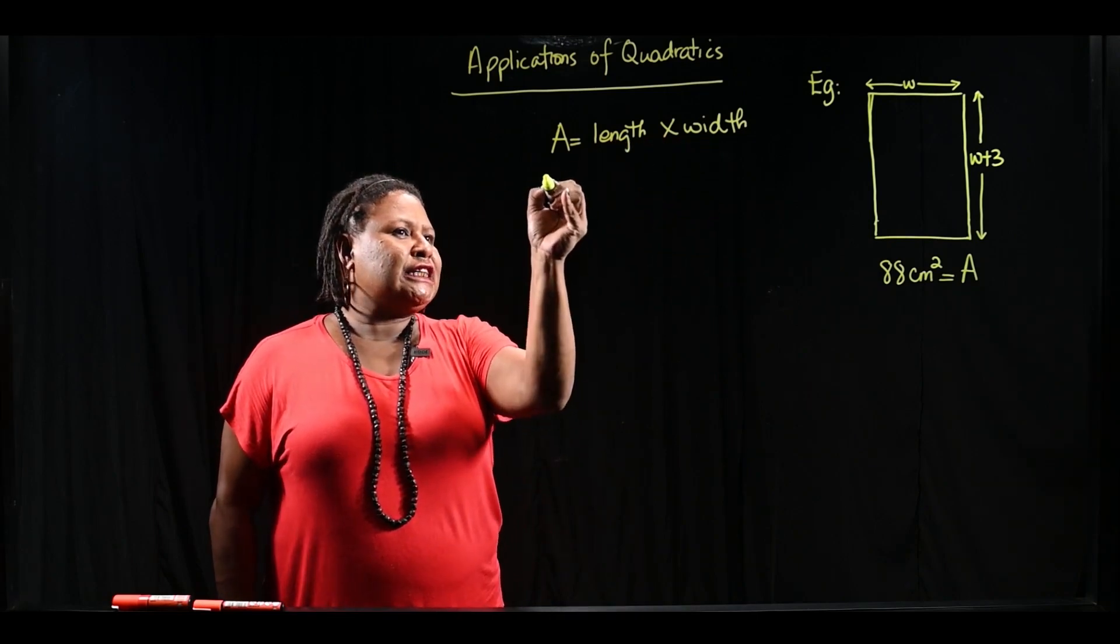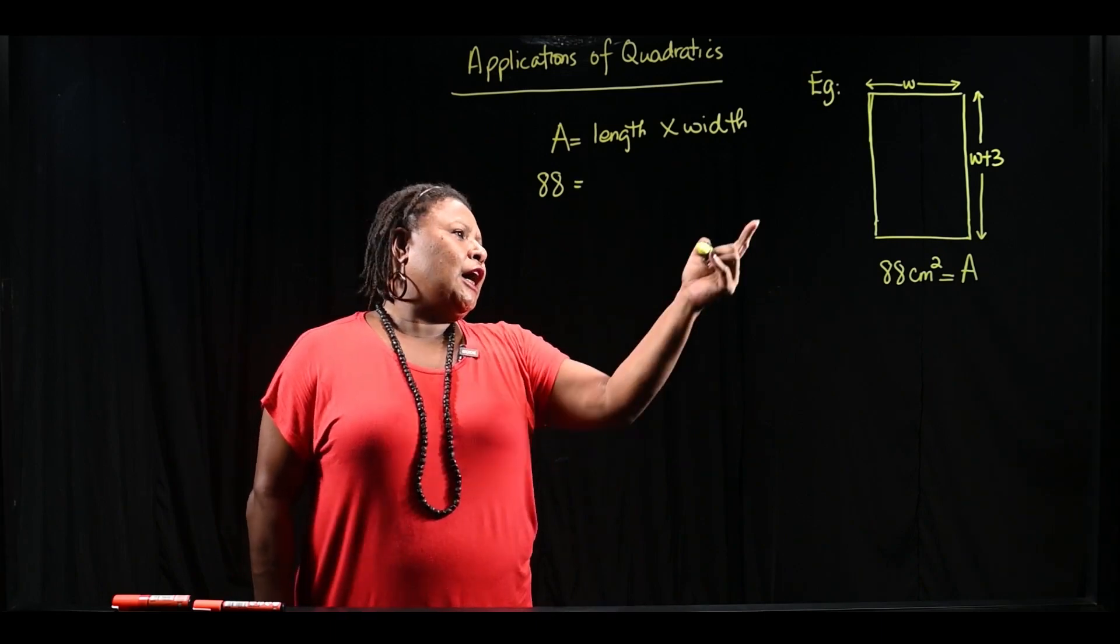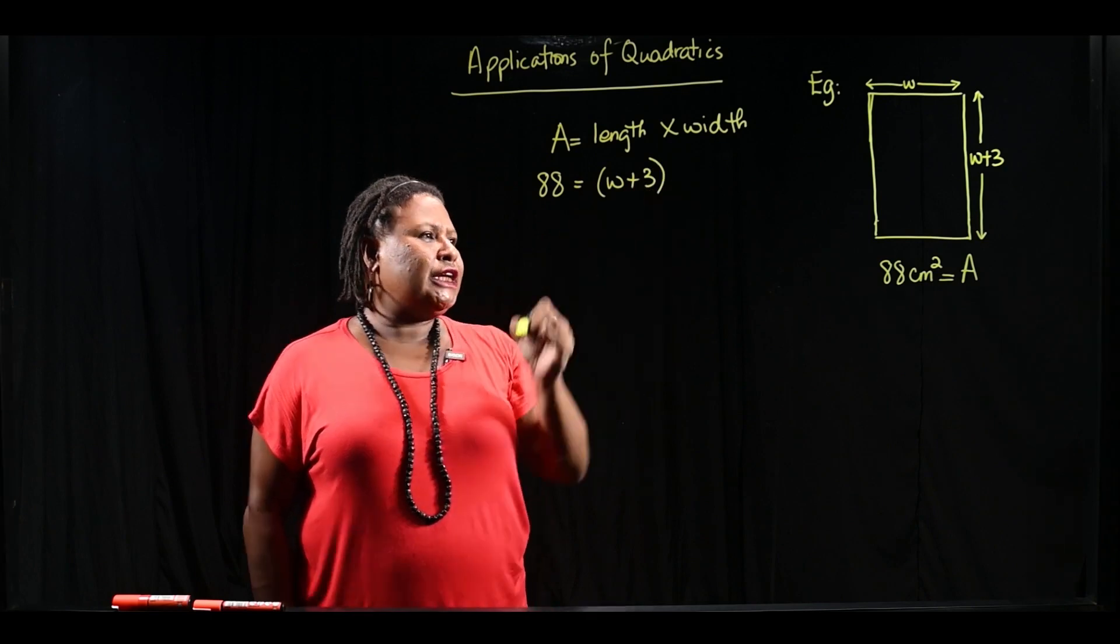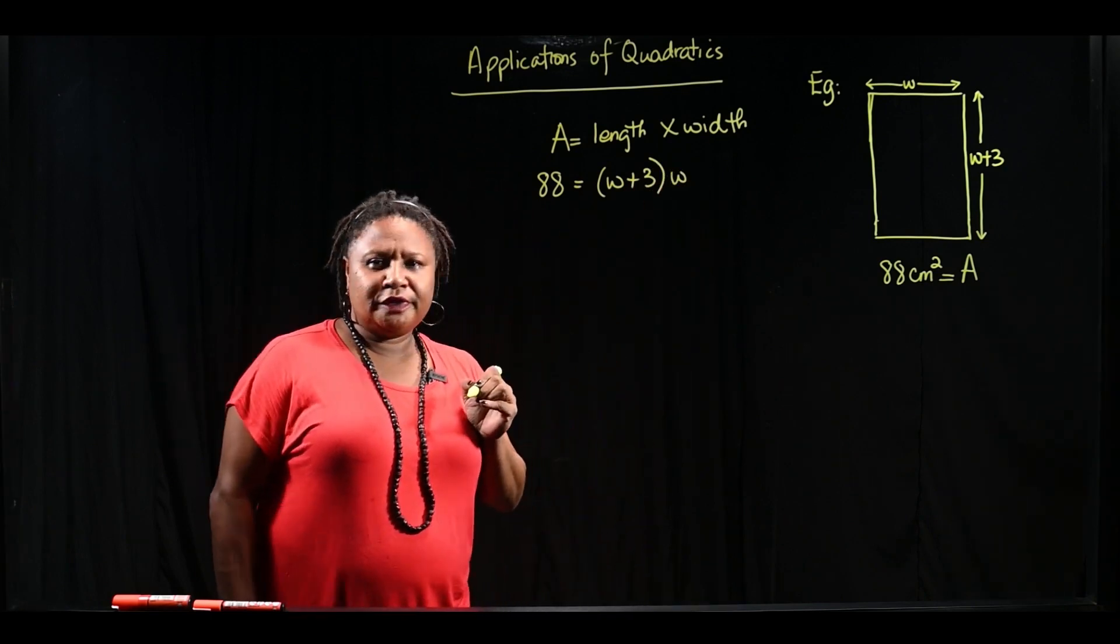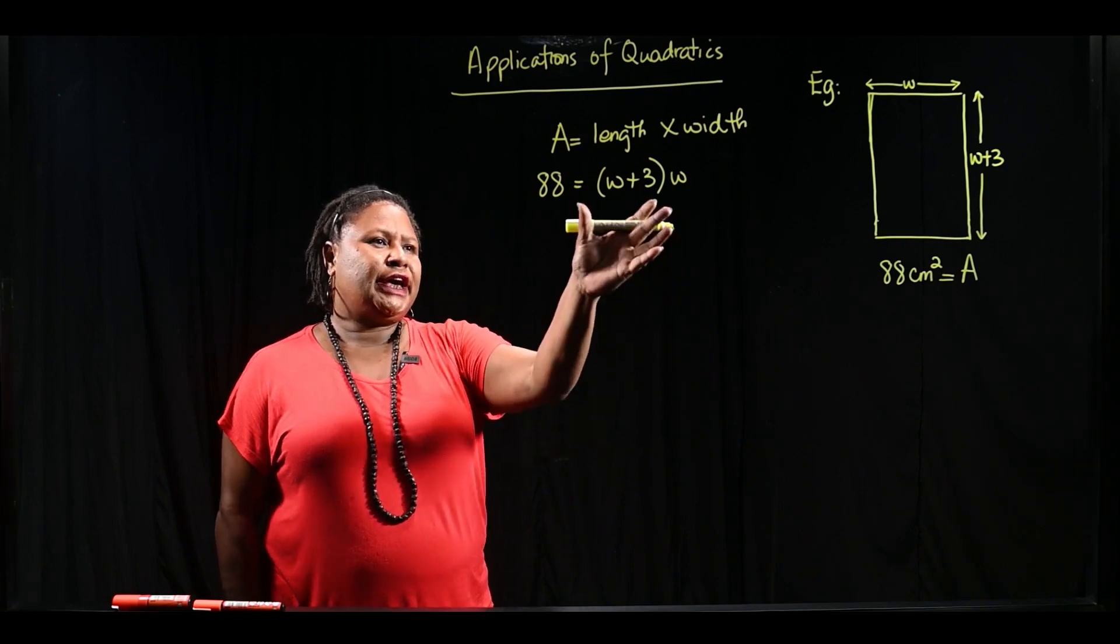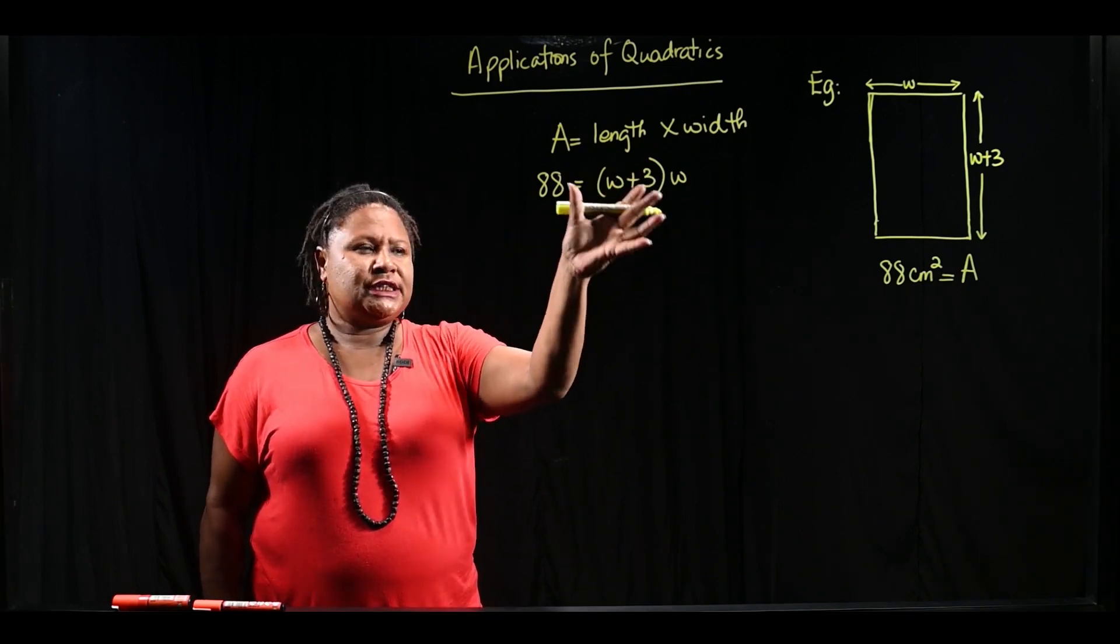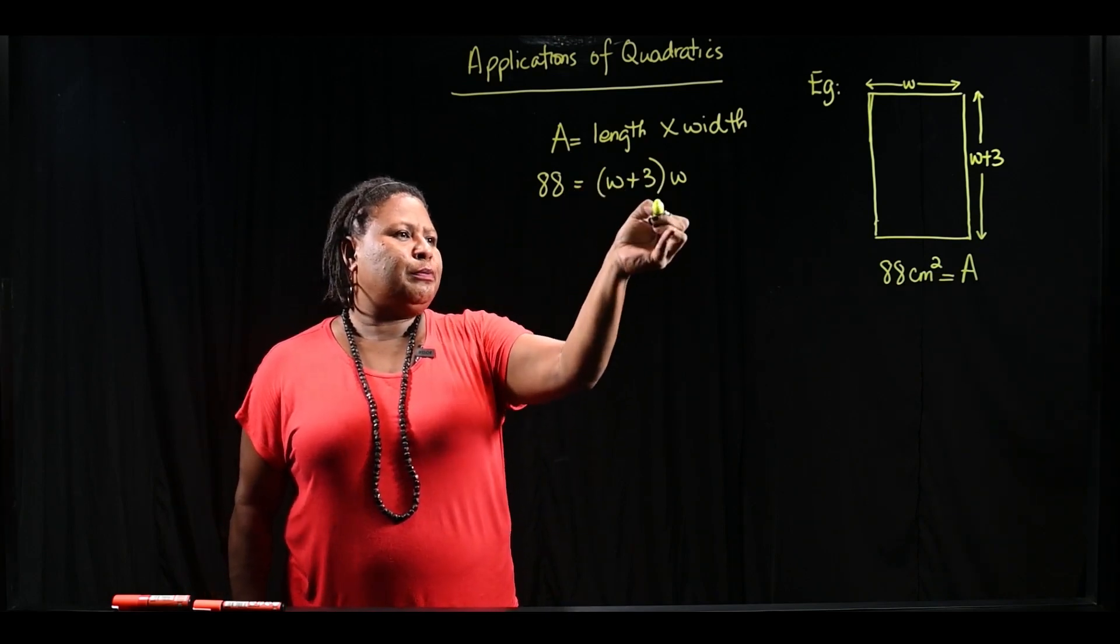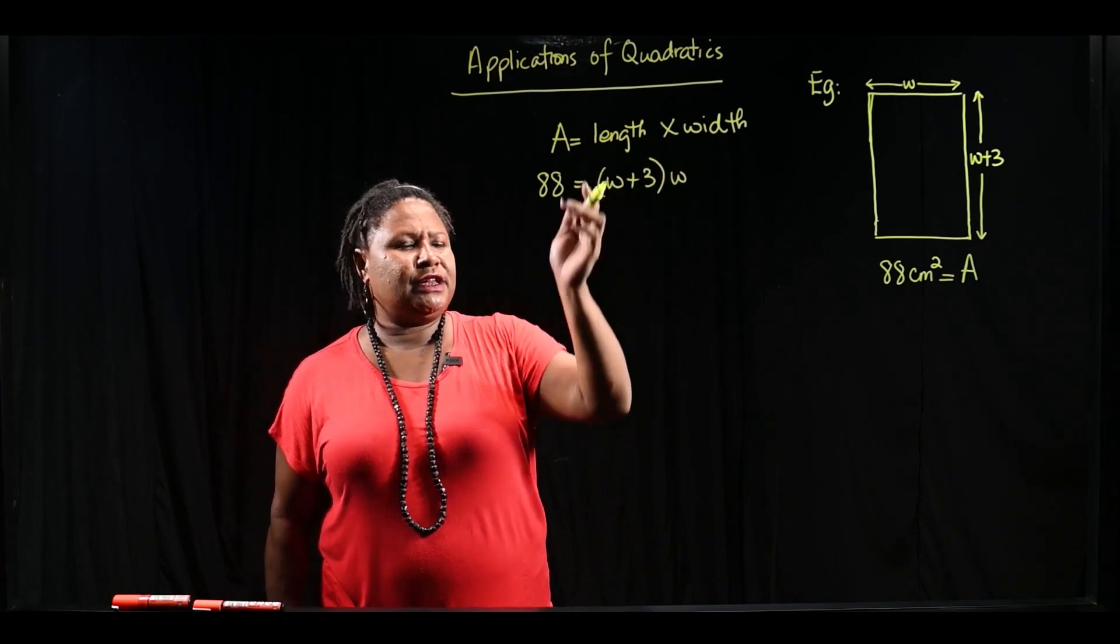So area is 88 square centimeters. Our length is W plus 3, and our width is W. So once we have all that information in an equation, we simplify and solve. Remove the brackets here by multiplying the term outside by each term in the brackets.